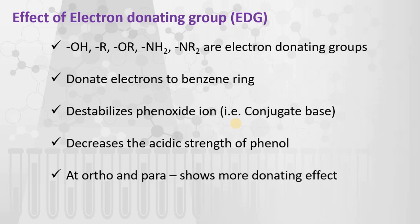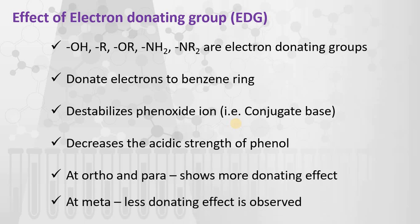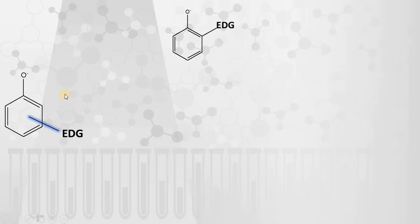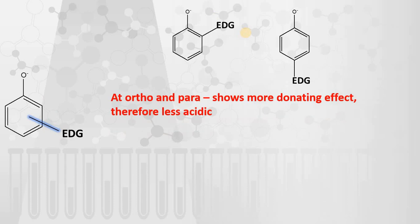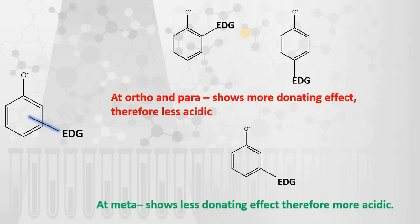Considering the particular positions: at the ortho and para positions, the electron donating effect is more, which is why the acid strength is less. At the meta position, less donating effect is observed. So an electron donating group at ortho or para position causes more electron donation, making those phenols less acidic, while an EDG at the meta position shows less donation effect, making those phenols more acidic.